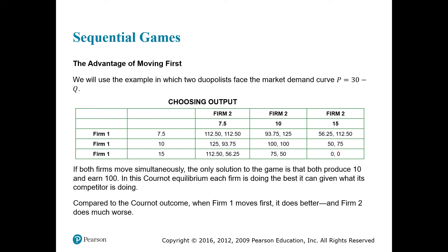If both firms move simultaneously, the only solution is that both produce 10 units and earn 100 each. But compared to the Nash equilibrium outcome, if firm one moves first it does better and firm two does much worse. So if firm one decides first and then firm two decides, firm one is going to produce 10, and firm two then chooses its best response.